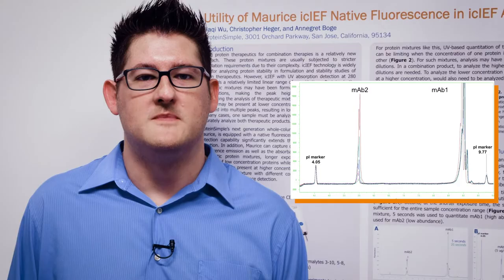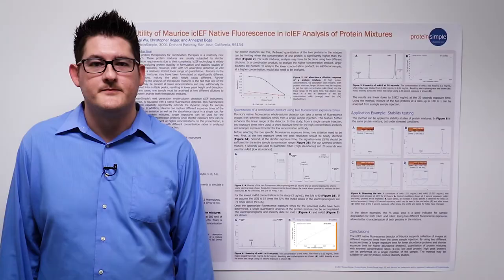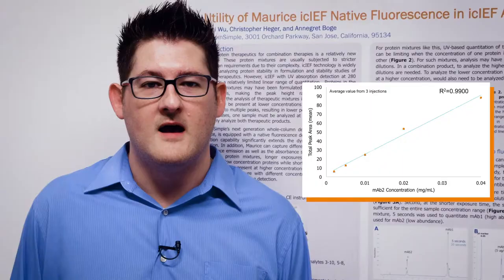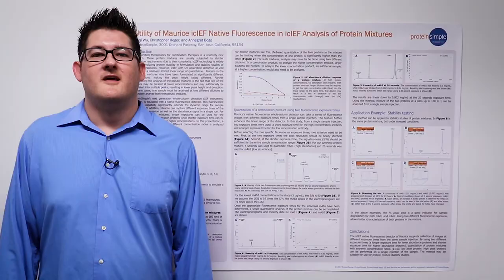Using the same dilution series and a 20-second exposure, we can now look at MAB2. As shown in Figure 5, the linearity for MAB2 is also greater than 0.99, again indicating an excellent correlation between sample dilution and resulting peak area.